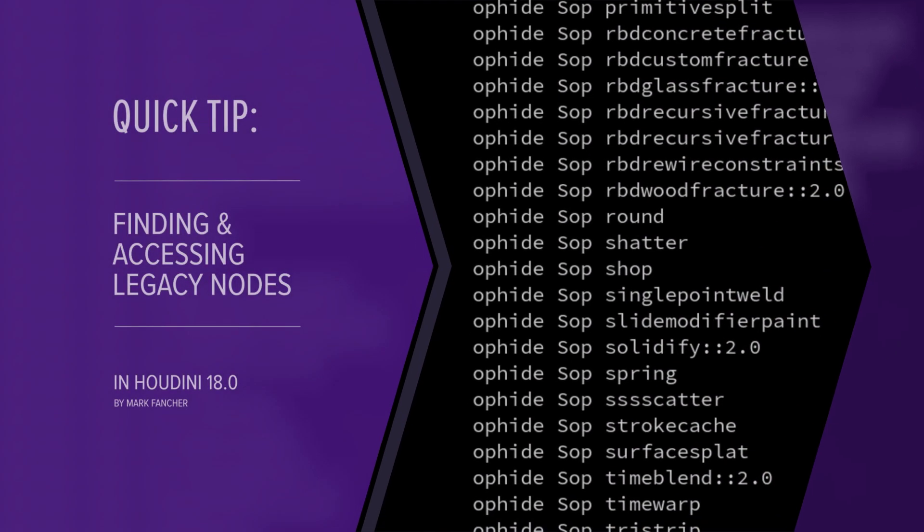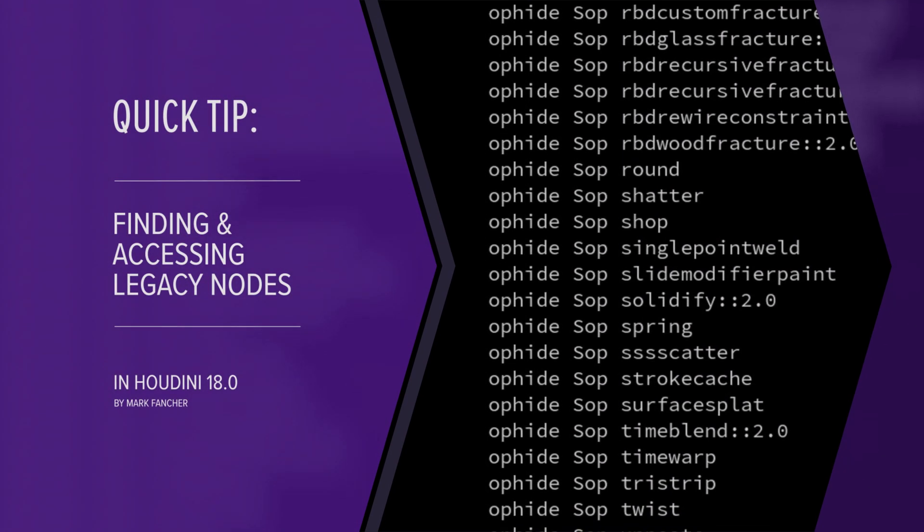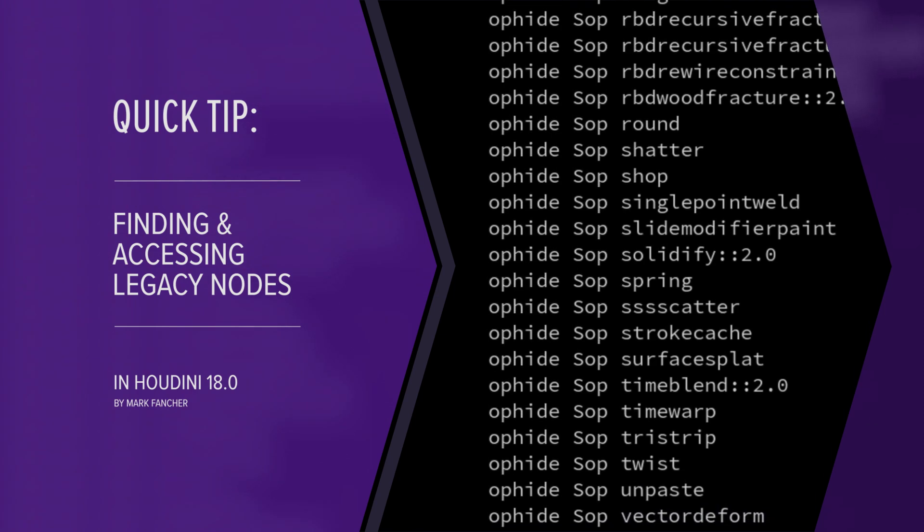Hello everybody. I'm here to throw down a quick tip about accessing legacy nodes — this may more or less be a reminder to myself in the future, but hopefully you find it helpful too. I'm going to show two methods: one is the `op unhide` and the other is the `op add` function, and we access these through the text port.